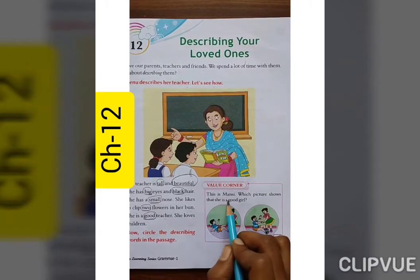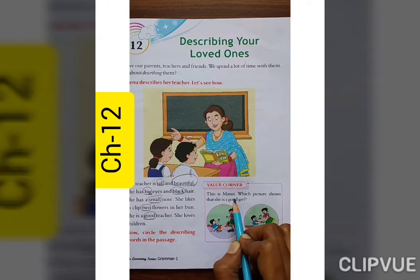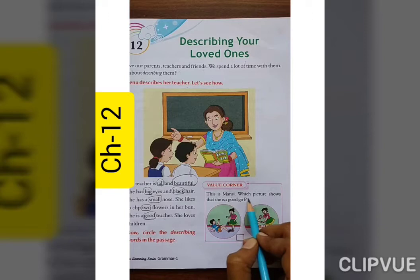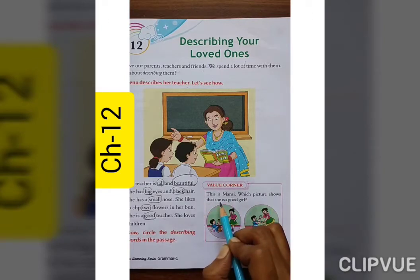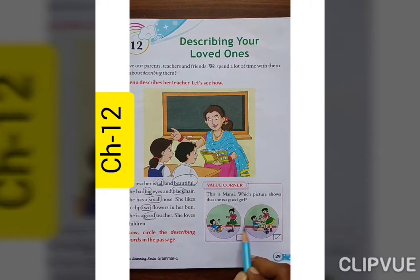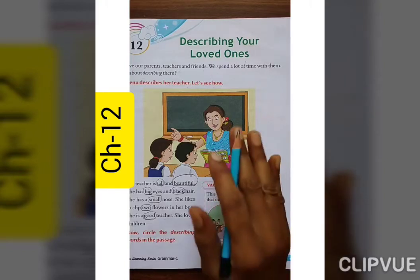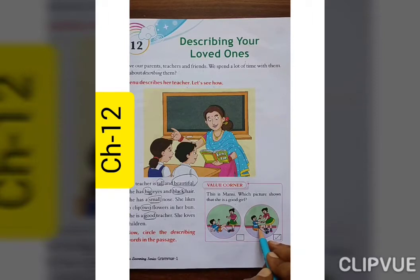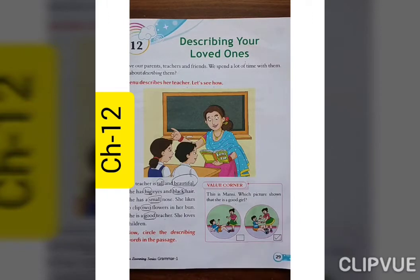Value corner — This is Mansi. Which picture shows that she is a good girl? यह दोनों picture में कौन सा picture ऐसा बता रहा है कि Mansi good है? Mansi ने यहाँ पे उस boy को push किया और वो लड़का गिर गया है, तो Mansi उस boy को खड़ा कर रही है — tick right here.